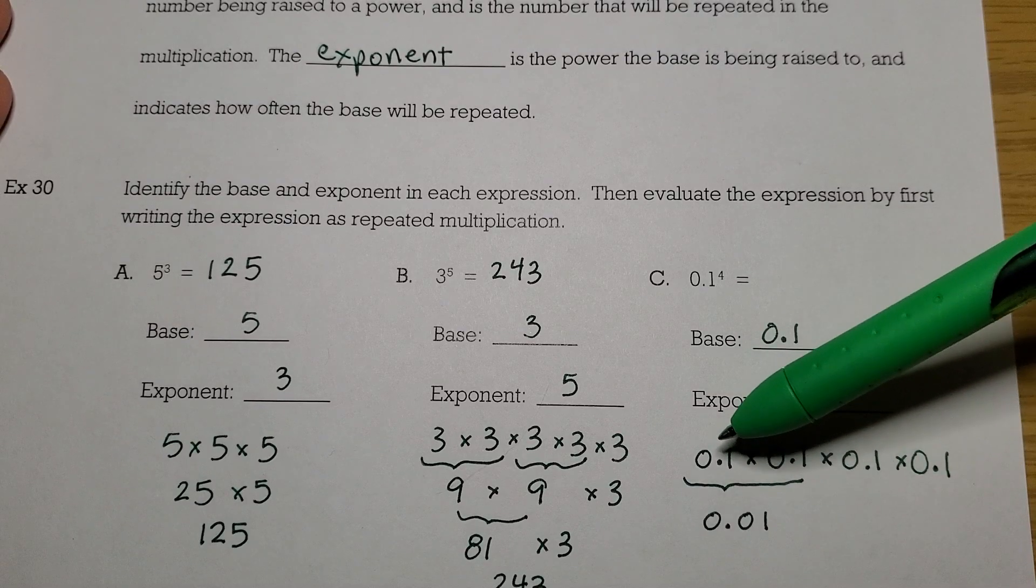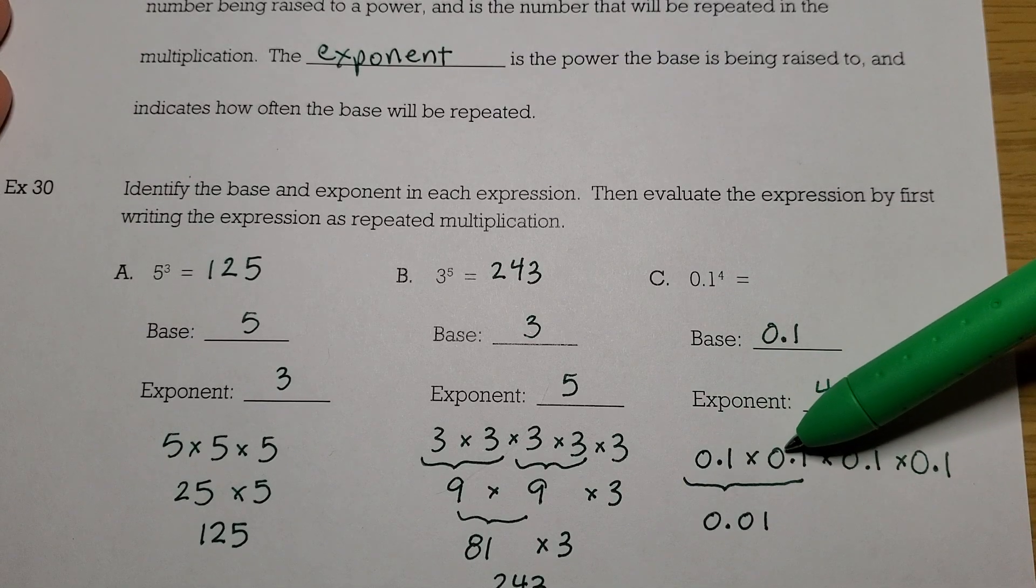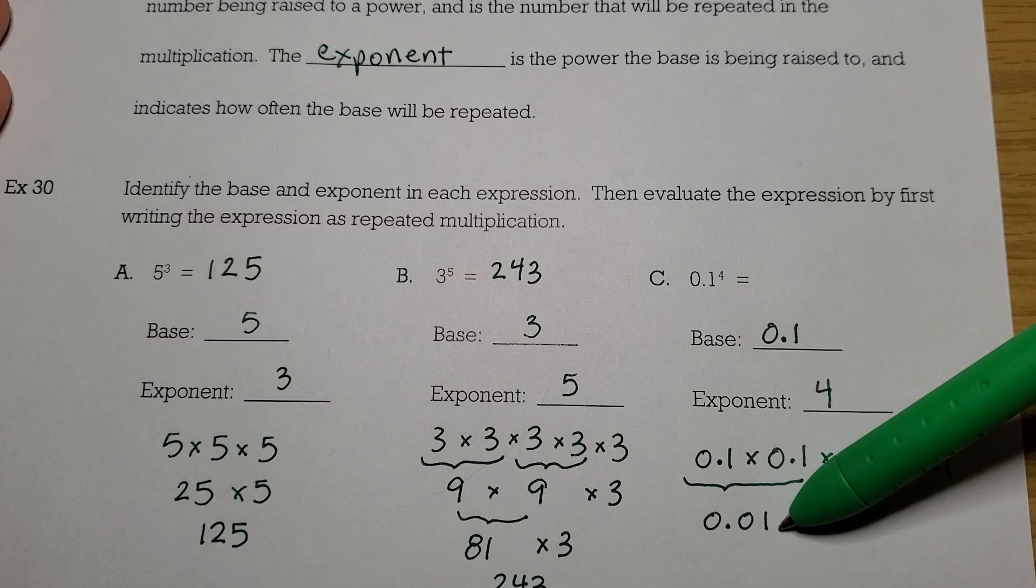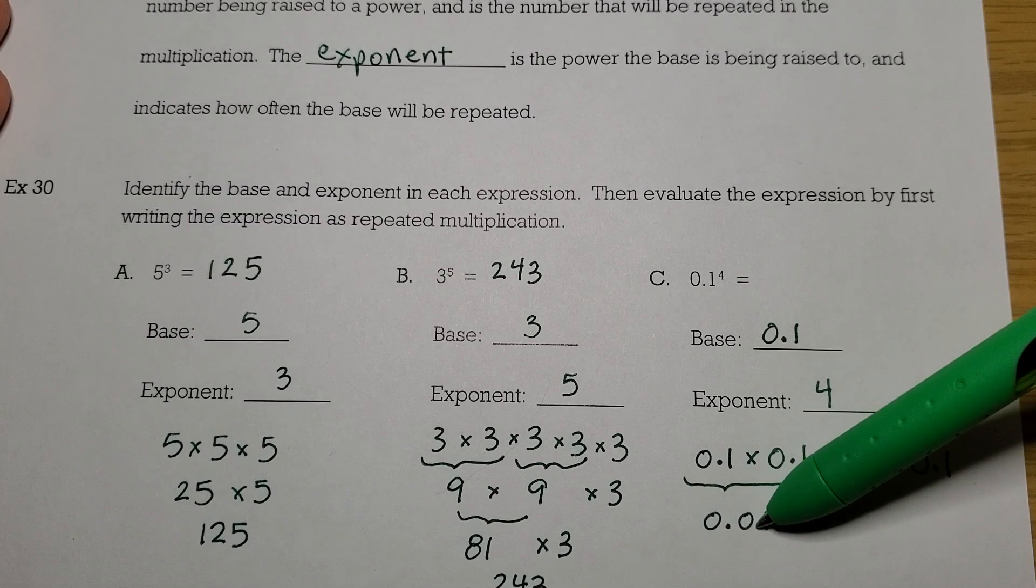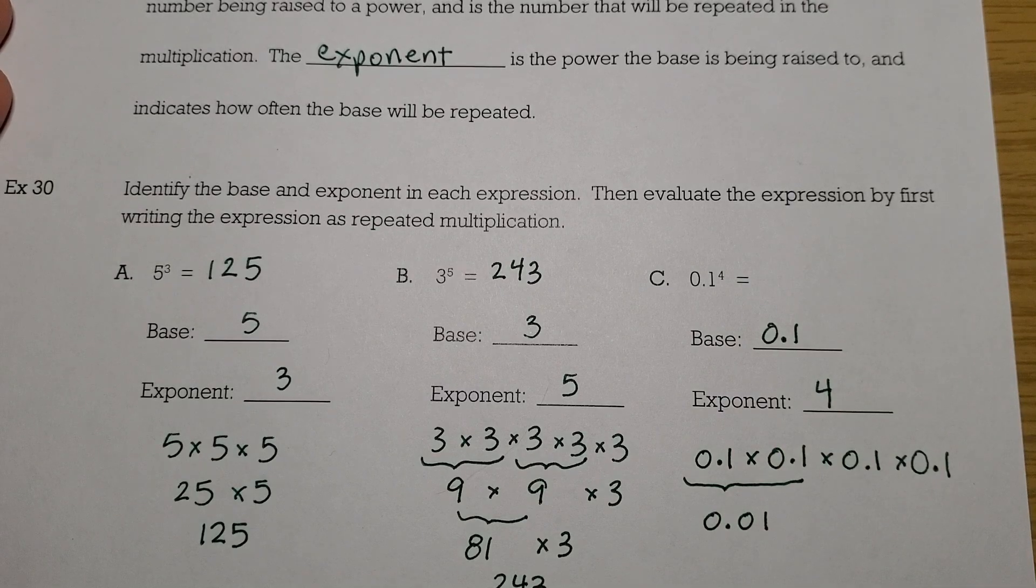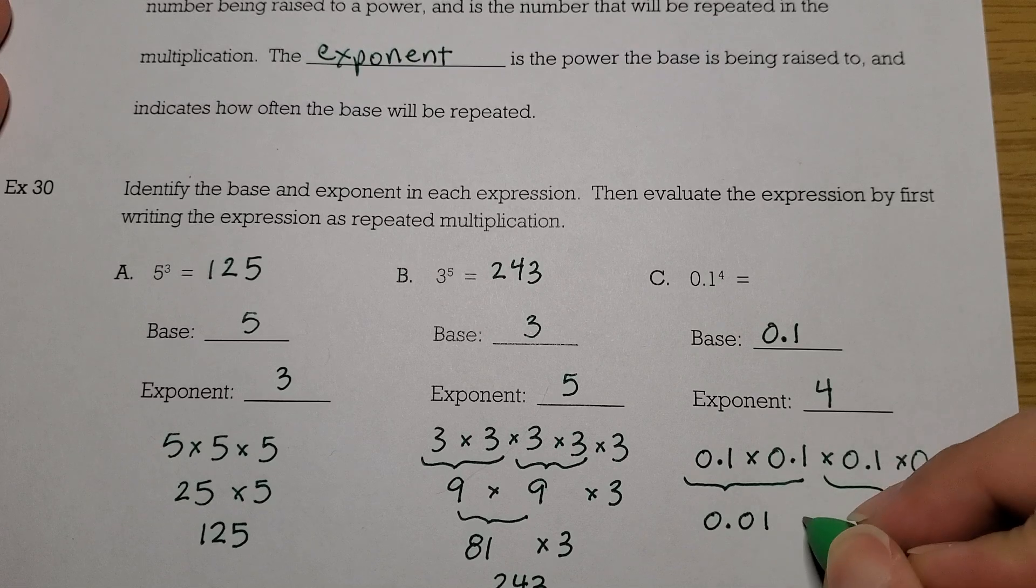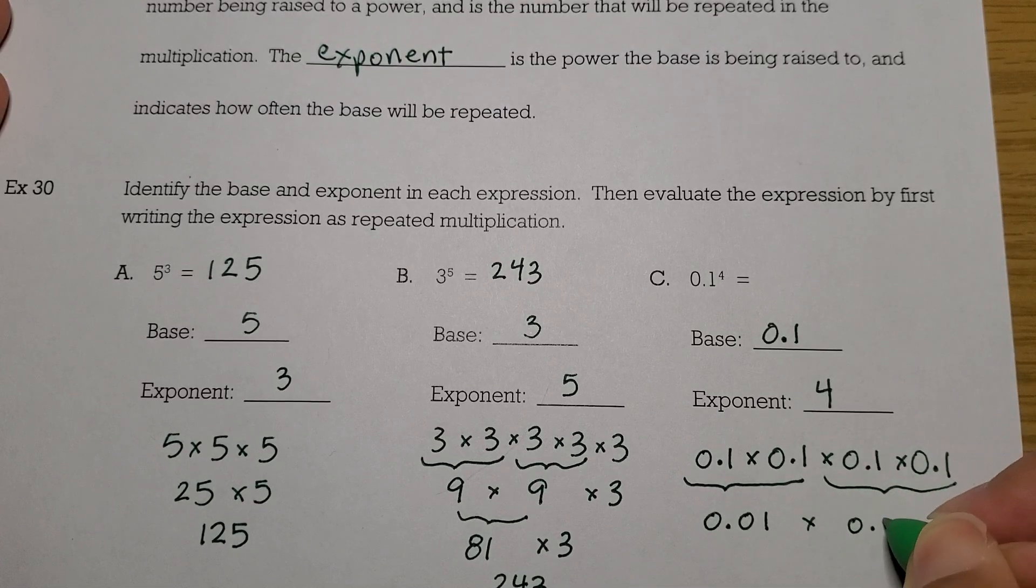And then there was a 0 here and a 0 here. So I took the 1, the decimal point on 1, and I moved it 1 for the first 0 and 2 for the second 0. So this will also be 0.01.